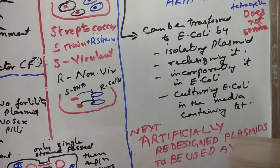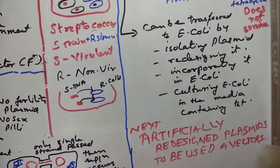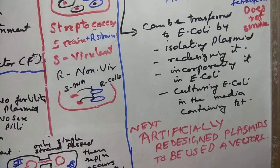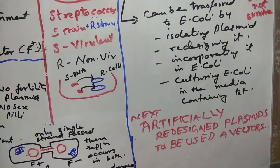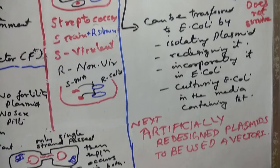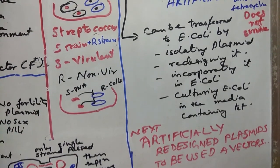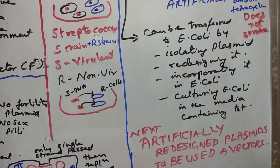Artificially redesigned plasmids have been made by technologists. This natural plasmid may not be so efficient, so to make it more efficient to be used as vectors in microbes, plants, or even animals, they have redesigned it with various segments altered and joined so that they would very easily carry the gene of interest and act as a vehicle — as a vector. We will talk about vectors in the next video.